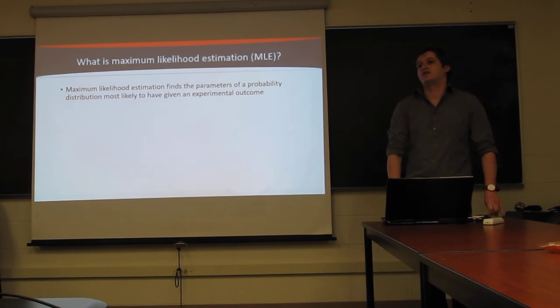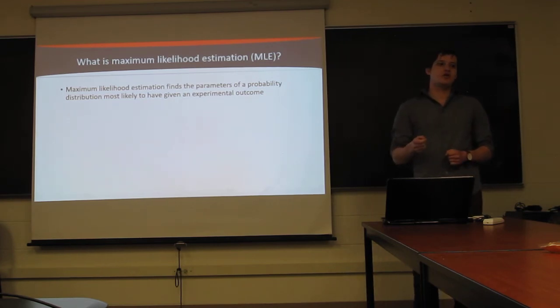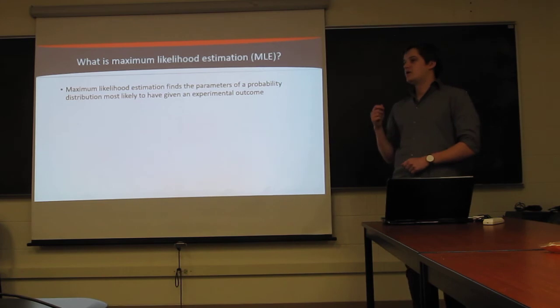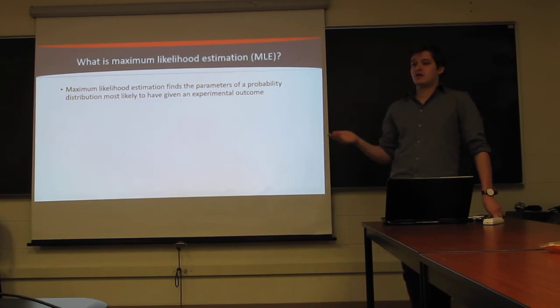So, what is a maximum likelihood estimation? The idea behind maximum likelihood is that we have some probability distribution defined by a parameter we don't know. We have the output of some set of measurements from the distribution, but we want to find the parameter that defines it. Examples being, if, say, we want to find the weighting of a coin. We don't know if it's 50-50 heads tails, 90-10 heads tails, or whatever.